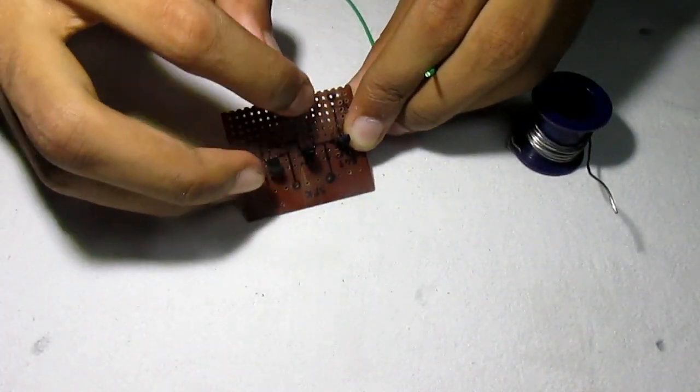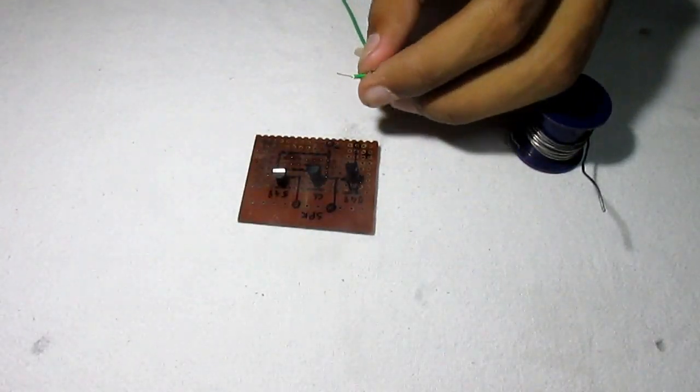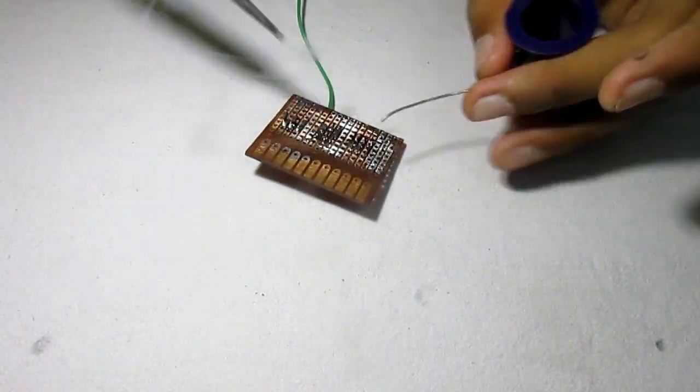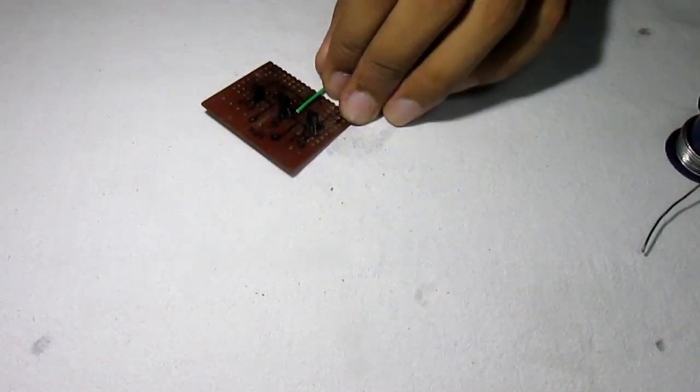Now, take a small piece of wire and connect the musical IC to the transistor following the circuit diagram we have drawn. Do the same for the other connections as well.